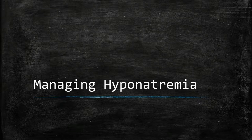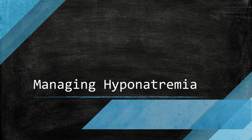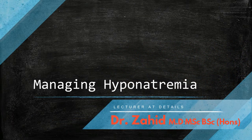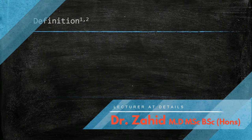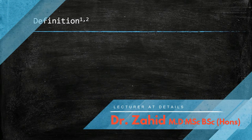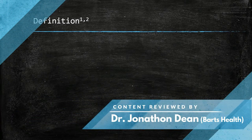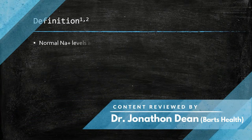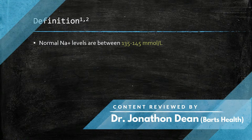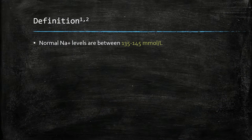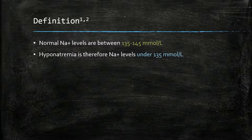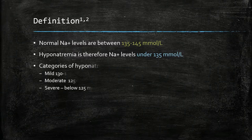Managing hyponatremia, a common and important scenario encountered in clinical practice. Normal sodium levels are between 135 to 145 mmol per litre, and therefore hyponatremia is anything below 135 mmol per litre. We can categorise the severity of hyponatremia as mild, moderate, and severe.